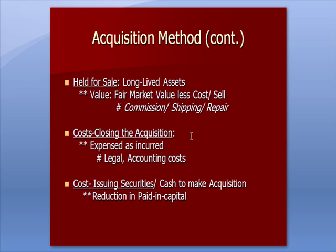The cost of issuing securities — let's assume we're going to issue common stock and use the proceeds to make the acquisition. The cost of issuing those securities, paying an underwriter to put the deal together, legal and accounting costs, and commissions to investment brokers to sell the security, is considered a reduction in our paid-in capital.